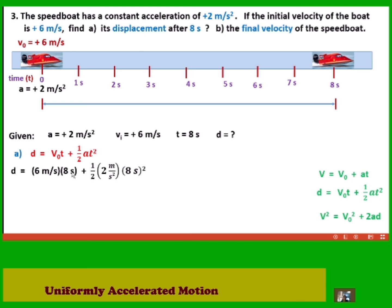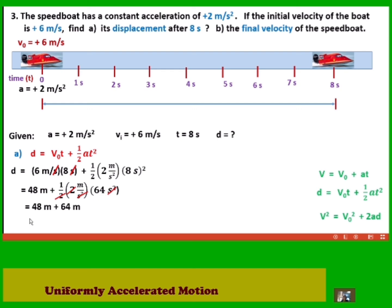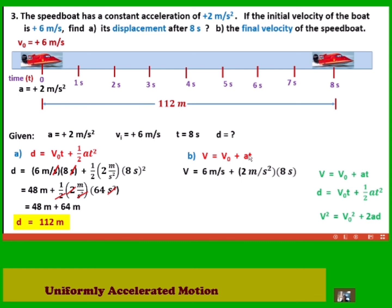Substituting into equation 2: initial speed is 6 meters per second, time is 8 seconds, and acceleration is 2 meters per second squared. Simplifying: one half times 2 cancels, leaving 8 squared which is 64 meters, and 6 times 8 is 48 meters. So 48 plus 64 equals 112 meters — the displacement is 112 meters. For part B, the final velocity of the speed boat uses equation 1: initial speed is 6 meters per second, acceleration is 2 meters per second squared, and time is 8 seconds.